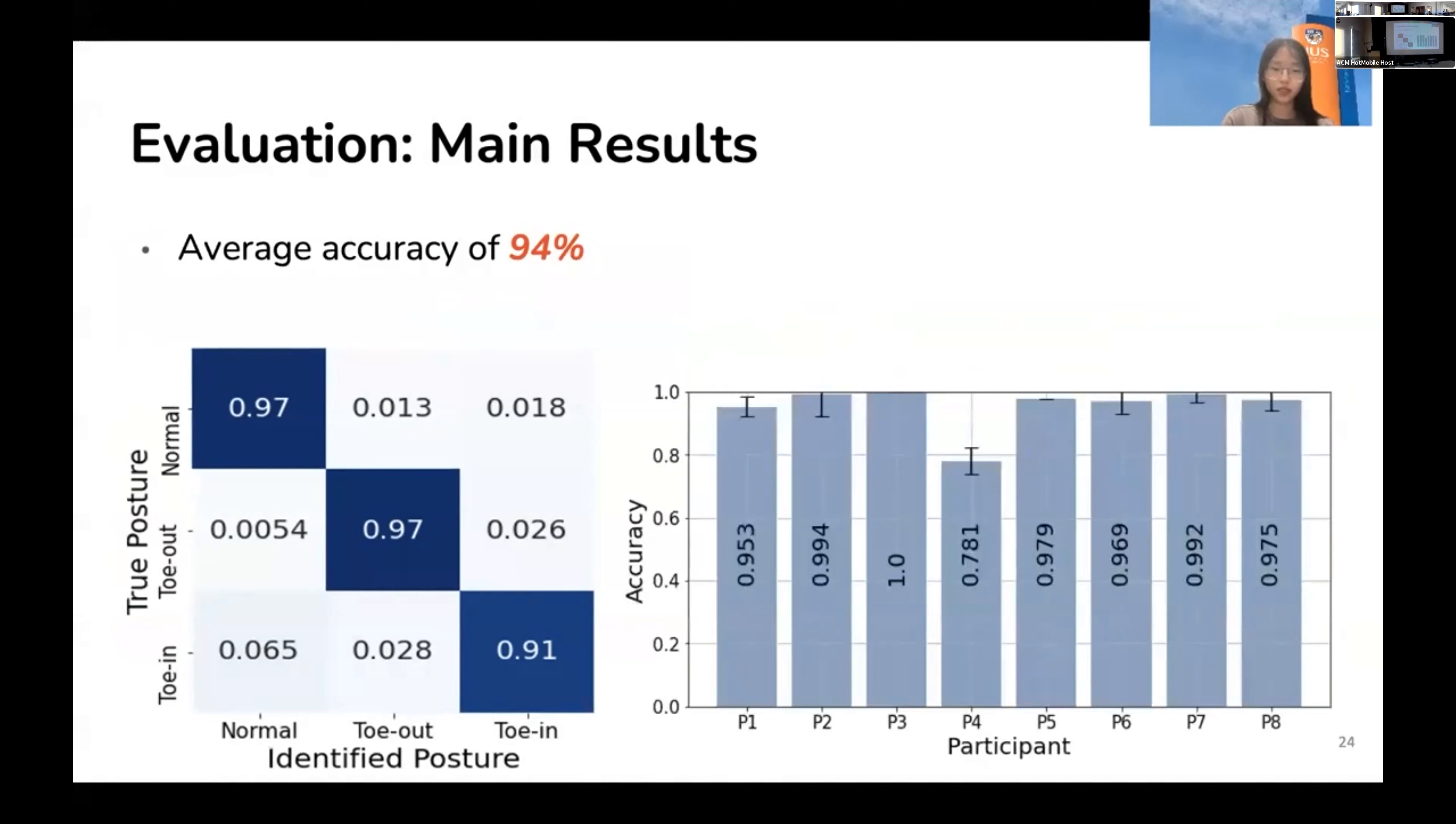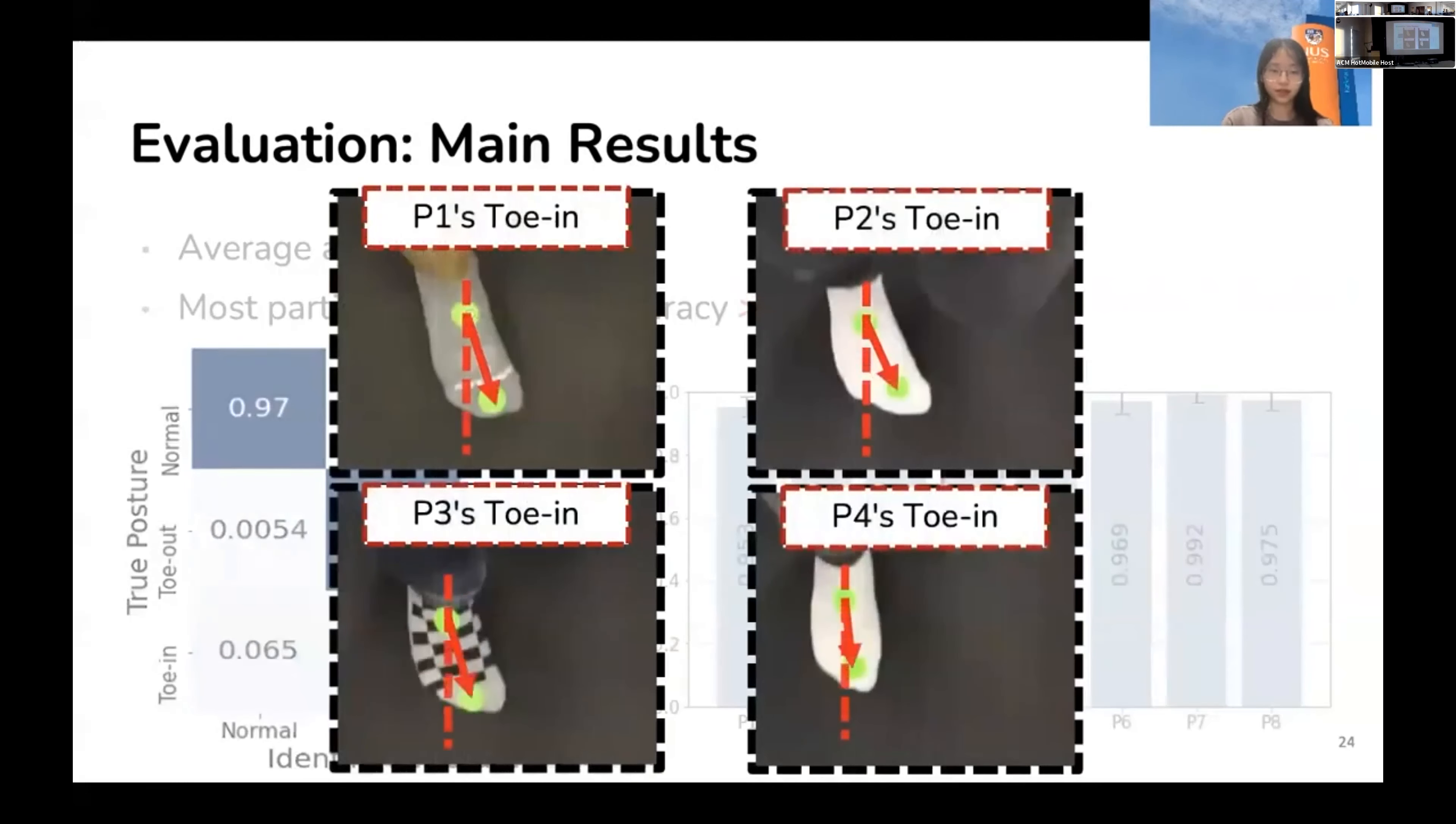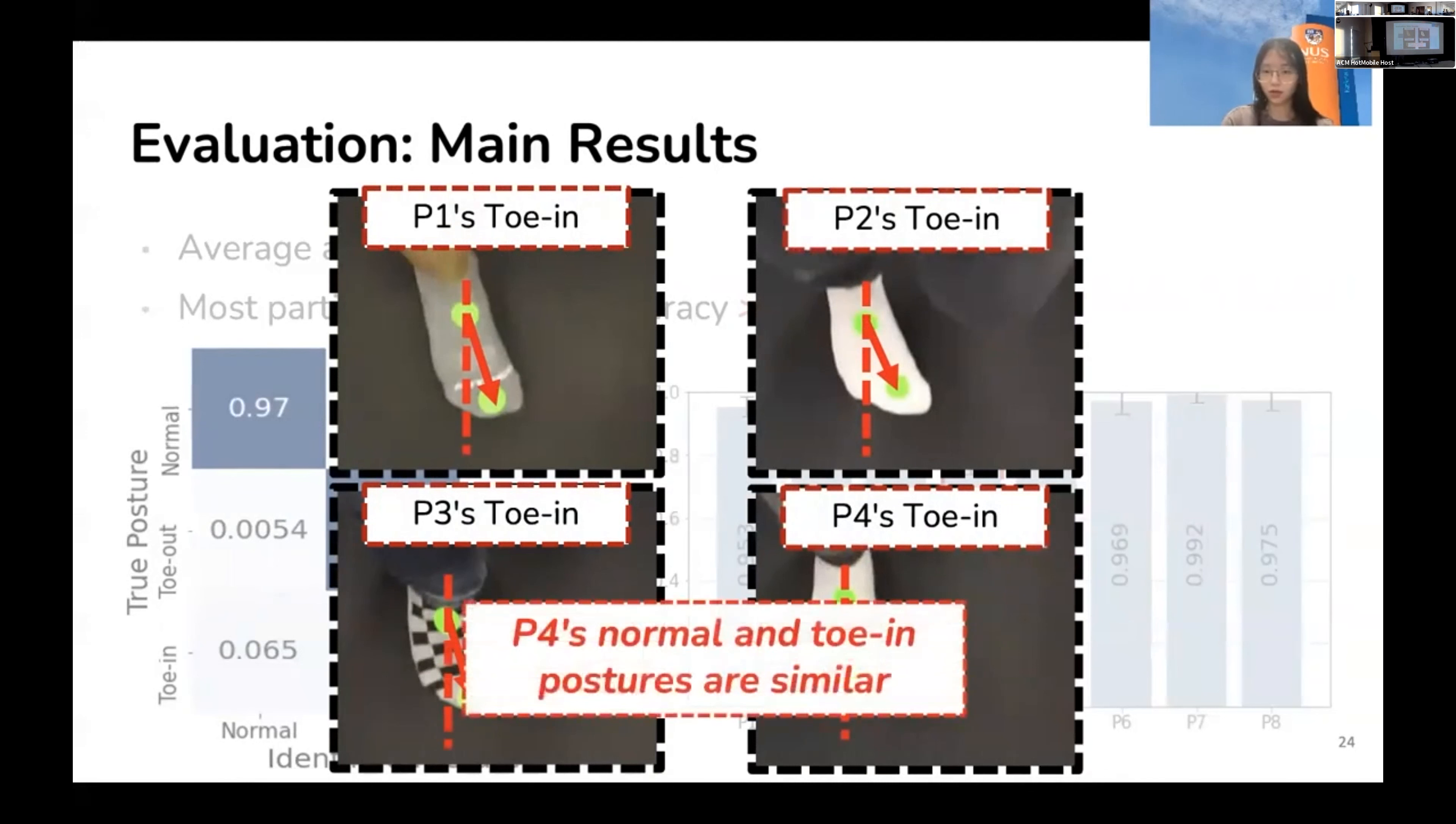Besides, we summarize individual identification accuracy in this bar chart. The x-axis represents each participant, and the y-axis is the identification accuracy. From this plot, we can conclude that most participants achieve an accuracy over 95%, except for P4. We can find the reason by comparing P4's posture with other participants. These four pictures are P1 to P4's foot position during toe-in walking. It is evident that P4 is not able to simulate toe-in significantly as other participants. So, P4's low accuracy may due to the small difference between its normal and toe-in postures.